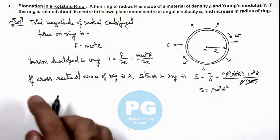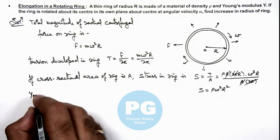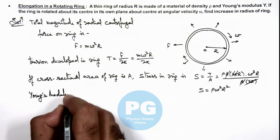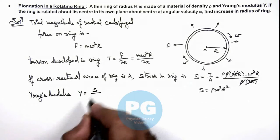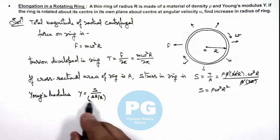So if we've got the stress developed in the ring, we can write the Young's modulus Y as stress divided by strain. And here strain we can write as ΔR / R, if ΔR is the increase in radius of the ring.